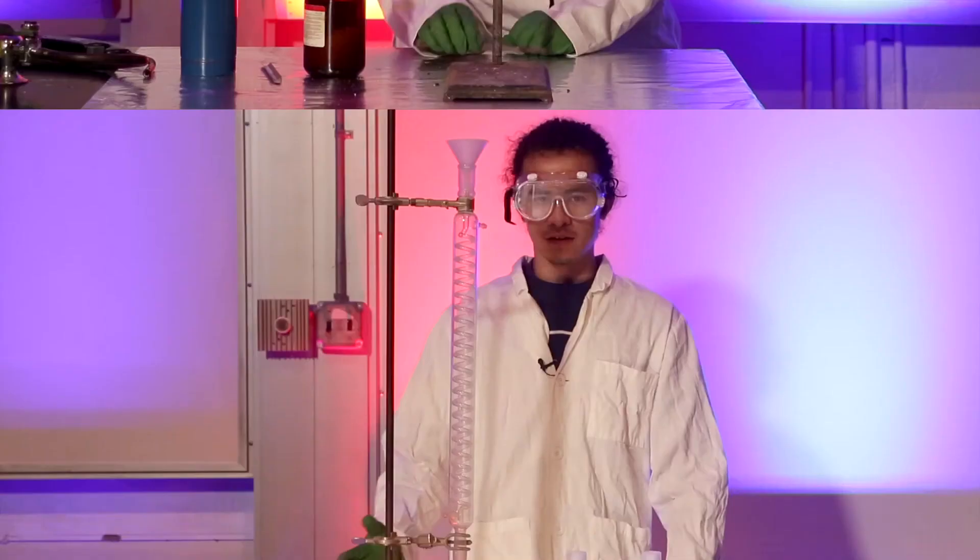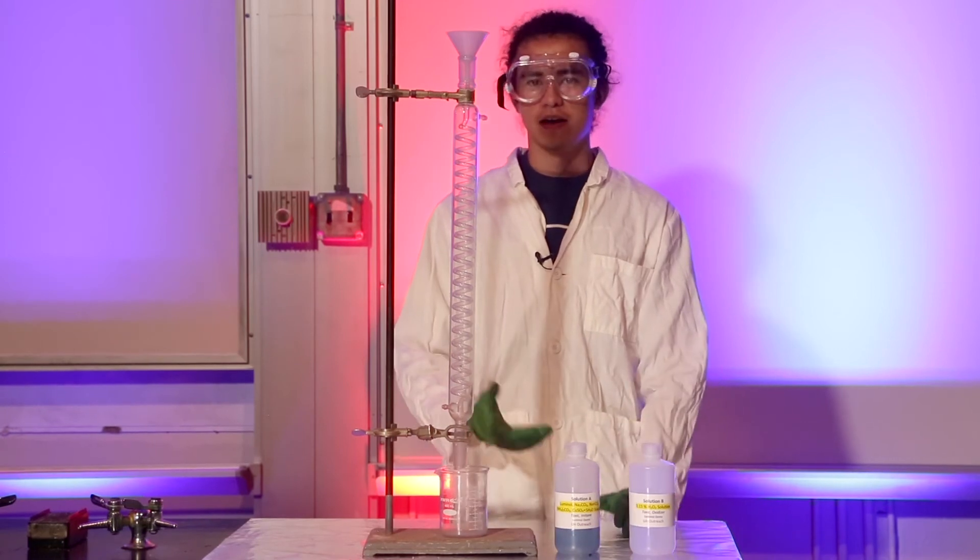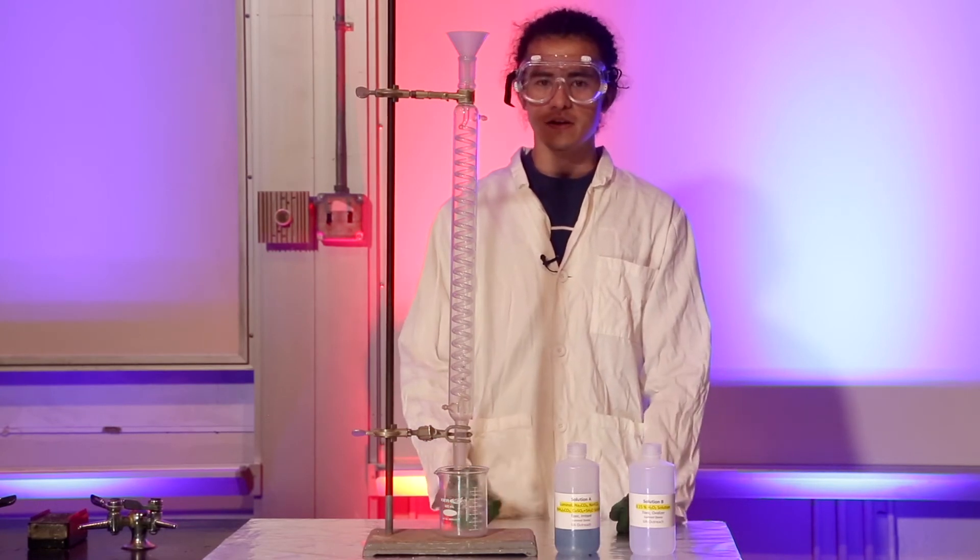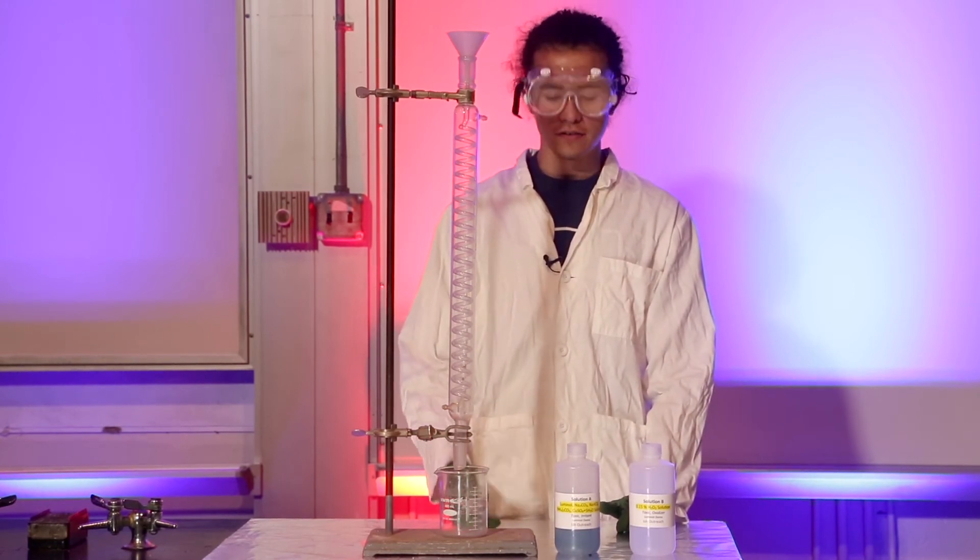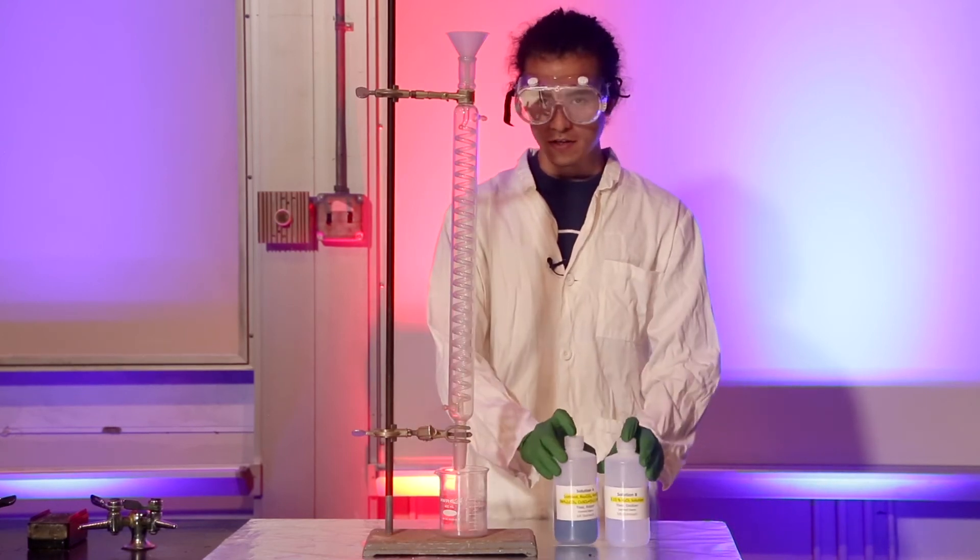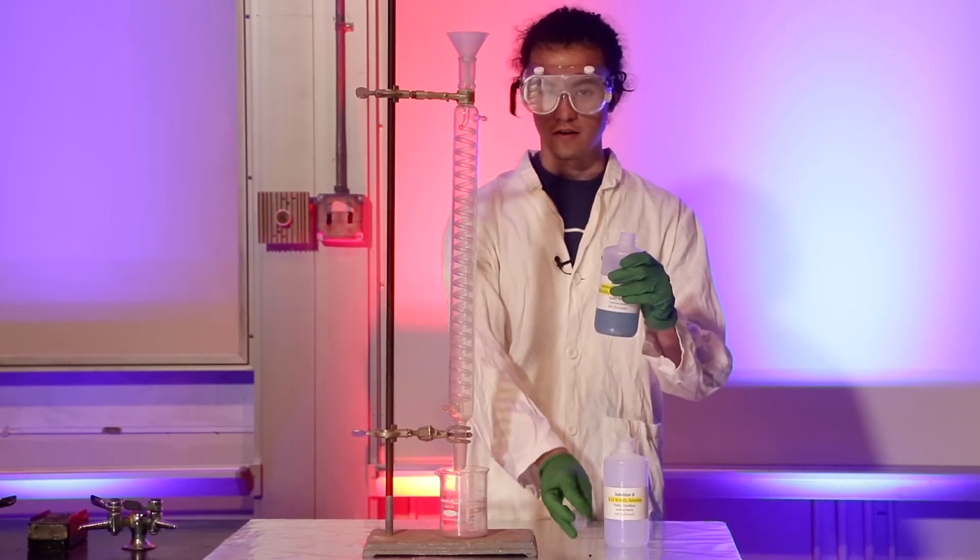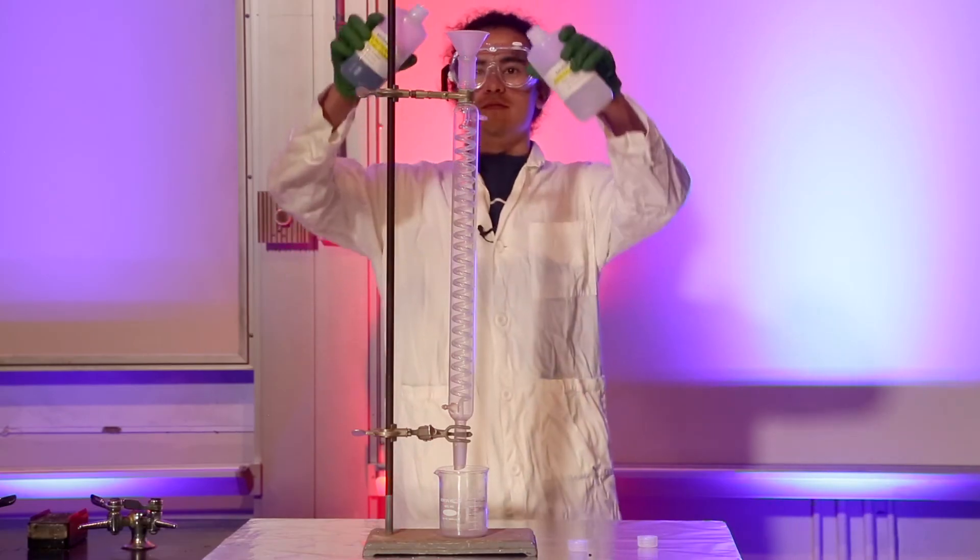Hello, we're going to be taking a look at chemiluminescence—chemi just for chemical and luminescence for light. Different reactions have different ways of expressing themselves. Some reactions give off heat, some require heat to happen, some give off light, some give off radiation. Here we're going to take a look at chemiluminescence, a reaction that produces light. By themselves they're kind of boring—they don't do anything. But when combined together, as these two substances come in contact with one another, first in the funnel and then throughout the column, they just react and give off a little bit of light.